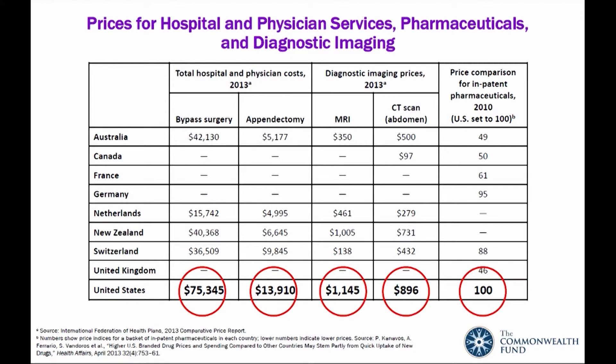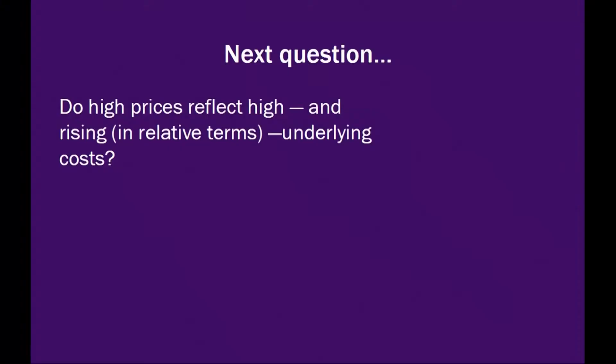Has anyone been to Switzerland? Switzerland is super expensive — everything is expensive there — but not health care compared to the United States. We beat them on that. So it is the prices that are much higher in the U.S. than elsewhere. That's something people have gradually over time come to recognize. But I want to push that further and ask: why are the prices so high, and how do we think about those high prices?